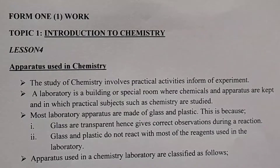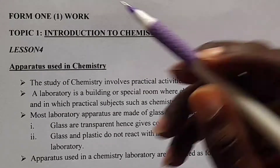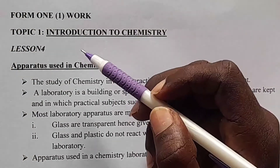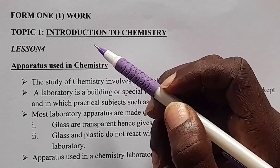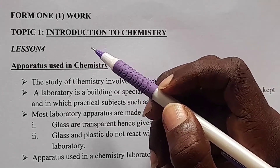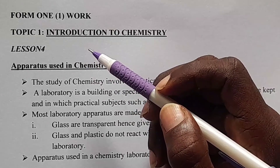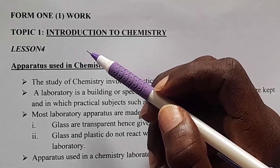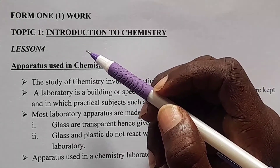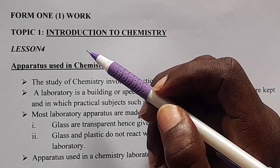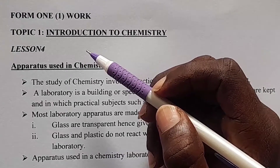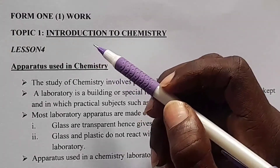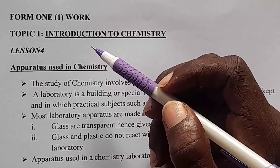Hello students, welcome. In Form 1, Lesson 3, previously we were dealing with chemistry — defining chemistry — and lastly we were dealing with the role of chemistry in society. Today in Lesson 4, we are dealing with the apparatus used in chemistry.